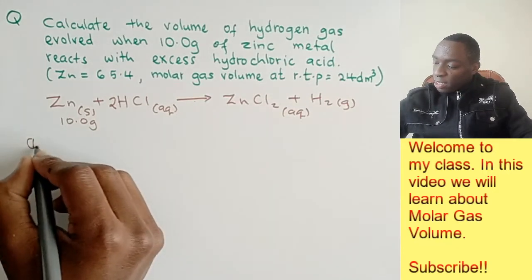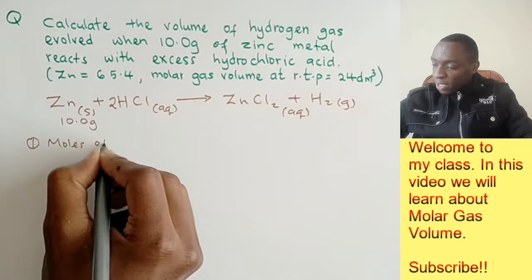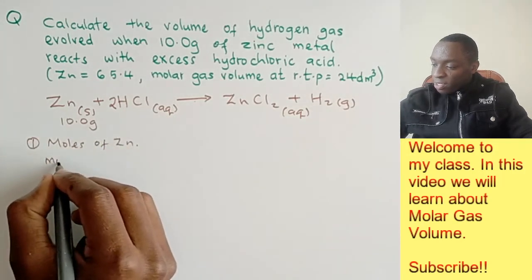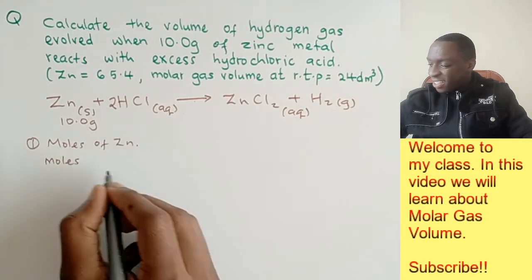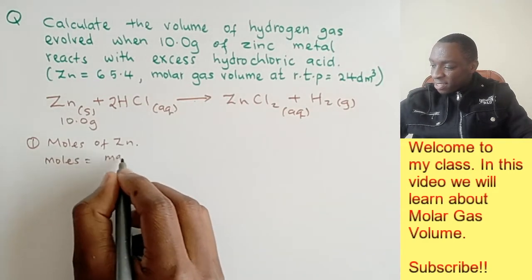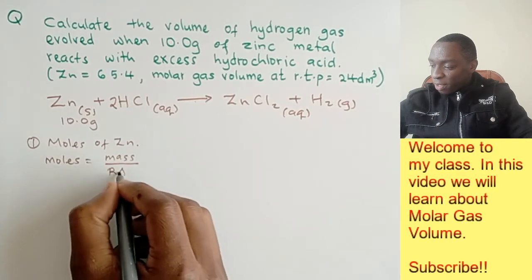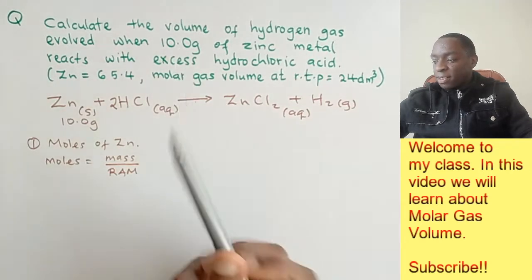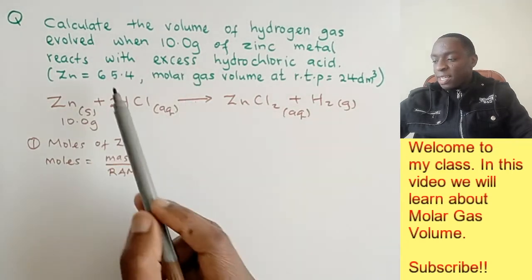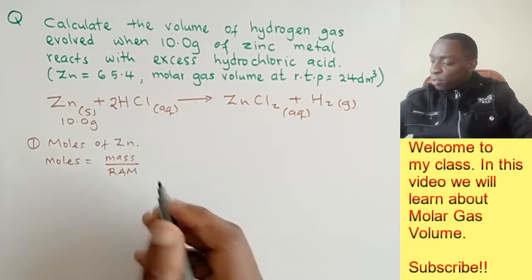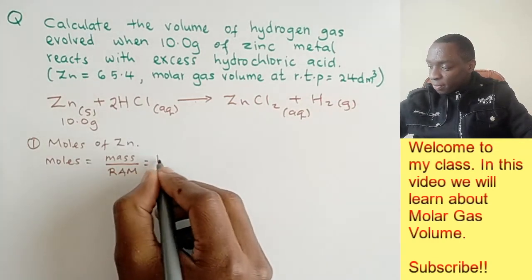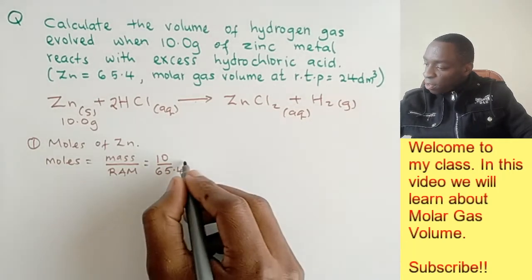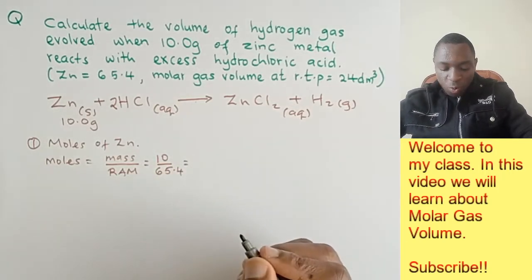The first thing is to calculate the number of moles of zinc. Moles equals mass divided by the relative atomic mass. The mass of zinc is 10 grams, and the relative atomic mass is 65.4. So we just divide this.